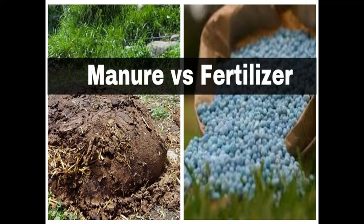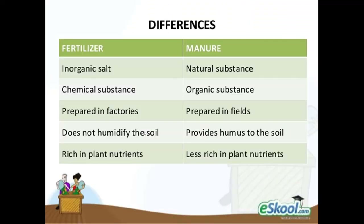Let us learn the difference between manure and fertilizer. Fertilizer is an inorganic chemical substance prepared in factories. Manure is a natural organic substance obtained from plant and animal waste and is prepared in fields or pits.